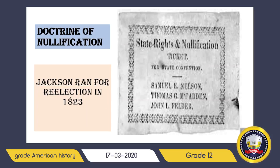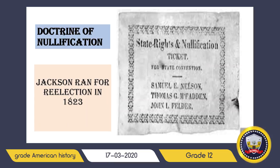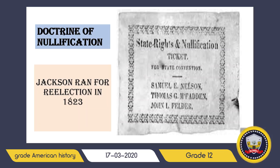Calhoun believed that Congress had no right to impose a tariff that favored one section of the country over another. This is how John C. Calhoun offered a solution for the Southern people, who felt hurt and hated the tariff.